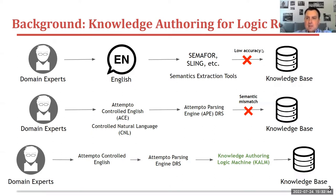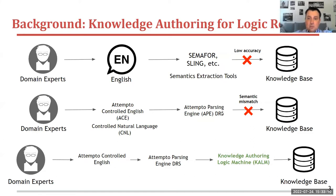However, as we know, this has a very low accuracy. In fact, in our experiments, we saw that to extract facts from such English text has very, very low accuracy — even 10-20%. The domain experts can also use a controlled natural language like Attempto Controlled English, which is parsed exactly into discourse representation structures. However, the problem here is that the domain expert must use the same vocabulary and grammar to represent their statements.